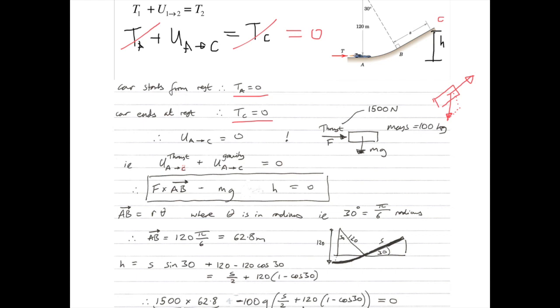Now, to find the height H, we need to add two components. So the first component is S sine of 30, which gives us this bit. We also need to add this bit, so that the height it goes from A to B. So this bit is 120 minus 120 cos of 30. So we have S sine of 30 plus 120 minus 120 cos of 30. And this is an expression for the height H.